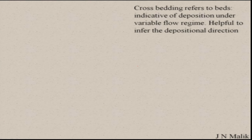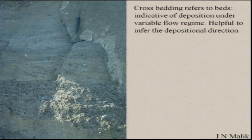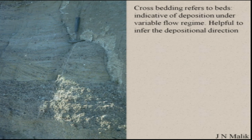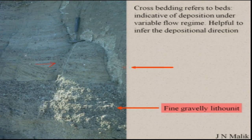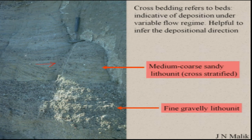Cross-bedding refers to beds indicating deposition under a variable flow regime, and it helps in identifying the depositional direction. For example, cross-stratification with inclination indicates the direction in which deposition took place, and from that we can say the flow was in that direction. Similarly, we can have fine-grained lithofacies and then medium to coarse-grained lithofacies, with a gradational contact between them.